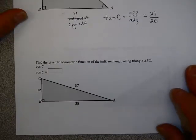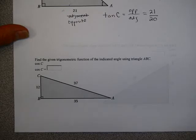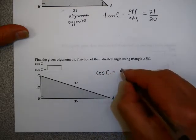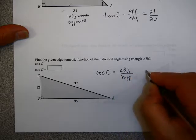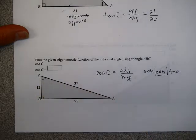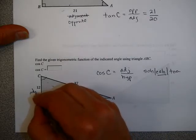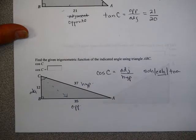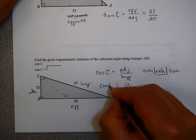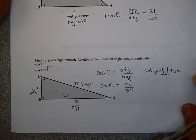Take a moment and see if you can figure out this problem. Here is a triangle; we're looking at angle C, and I would like to find the cosine. Cosine, remember, is adjacent over hypotenuse — that comes from SOHCAHTOA, the 'CA' part. At this angle, this is the opposite side, this is the adjacent side, and since it's opposite the 90-degree angle, this is the hypotenuse. So my adjacent side is 12, and my hypotenuse is 37.